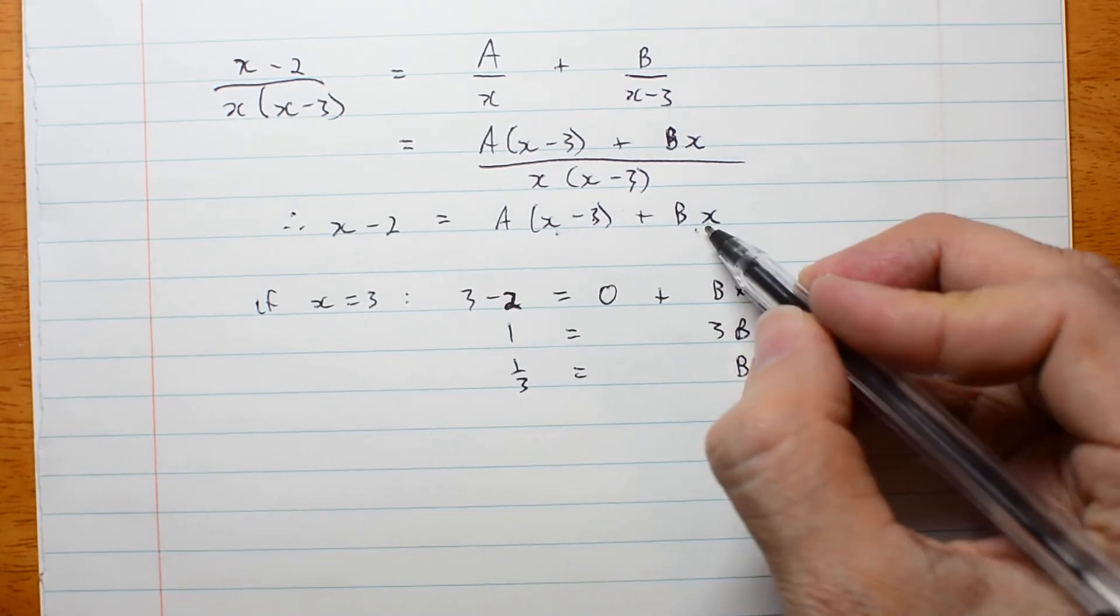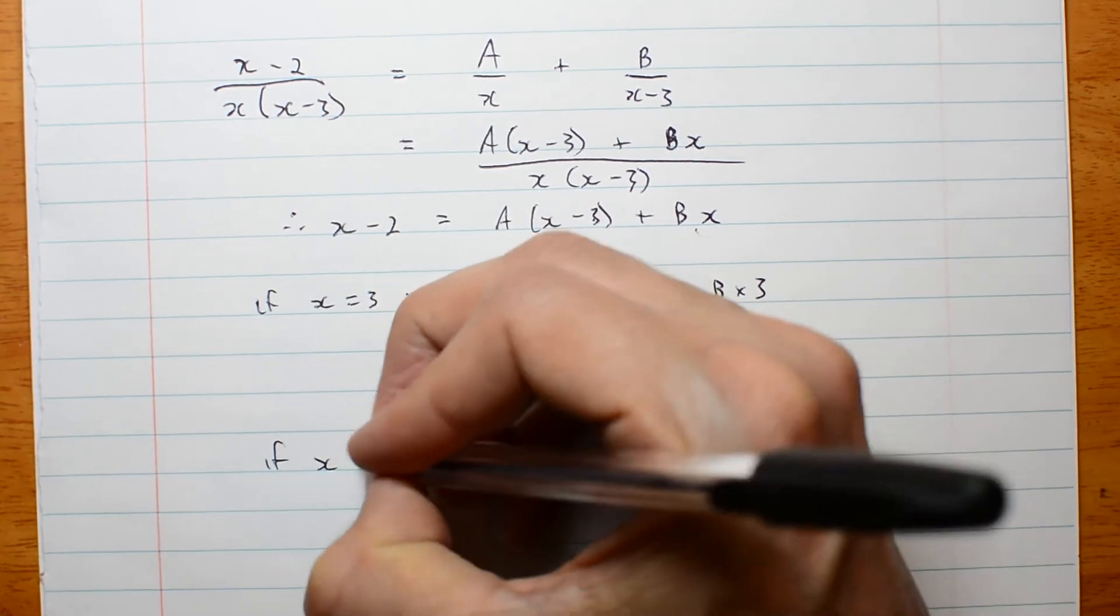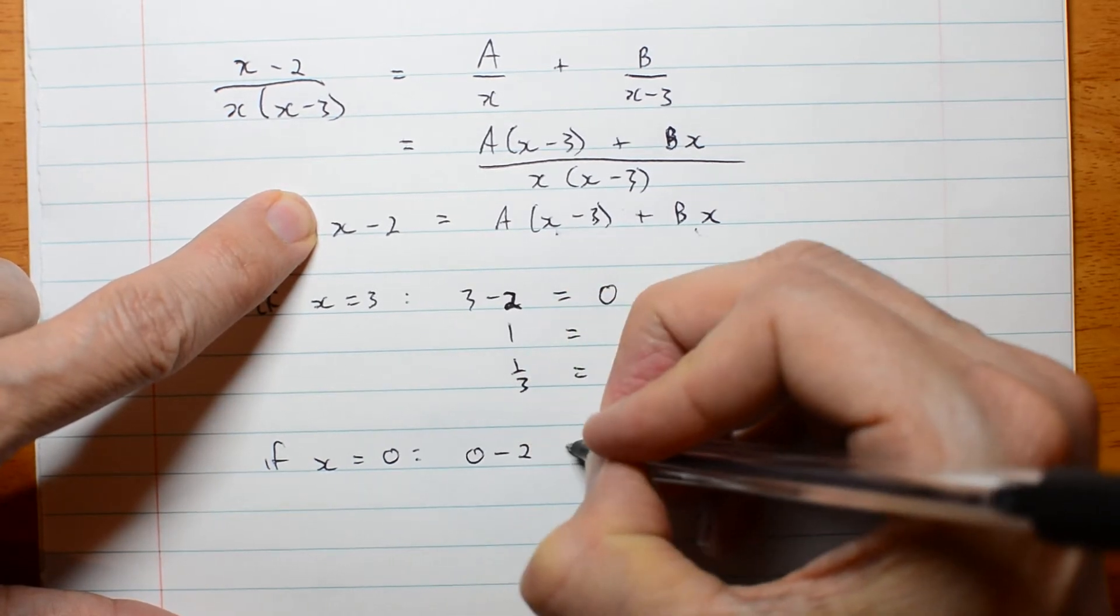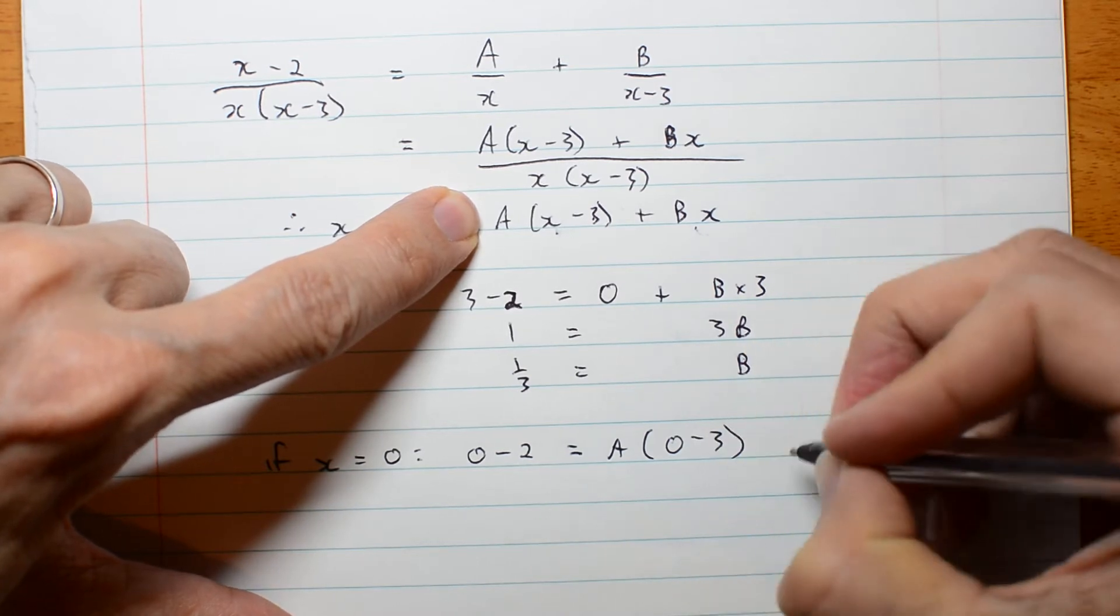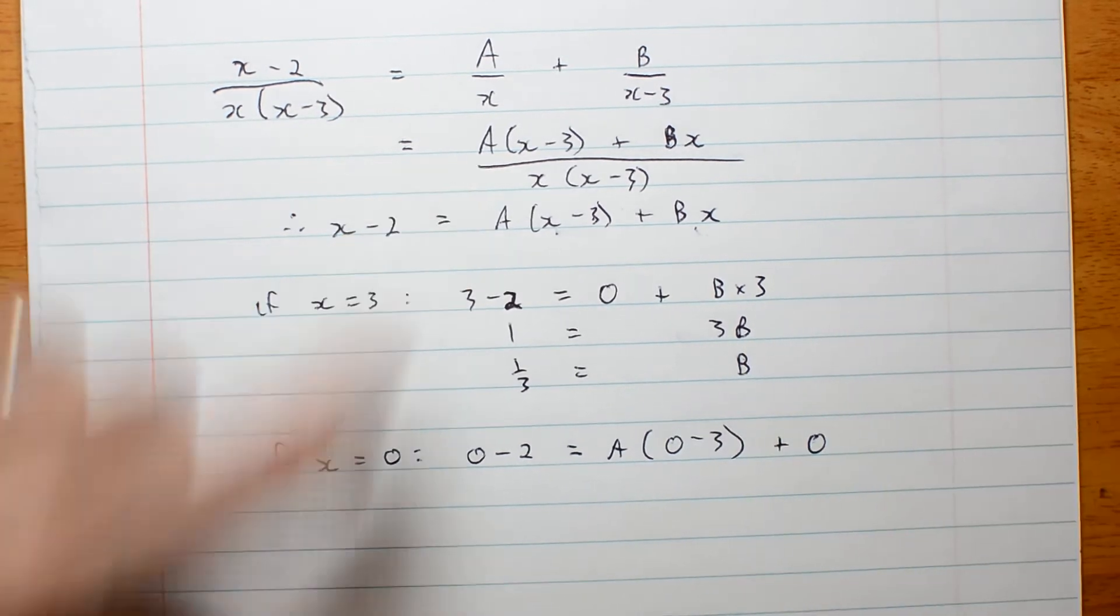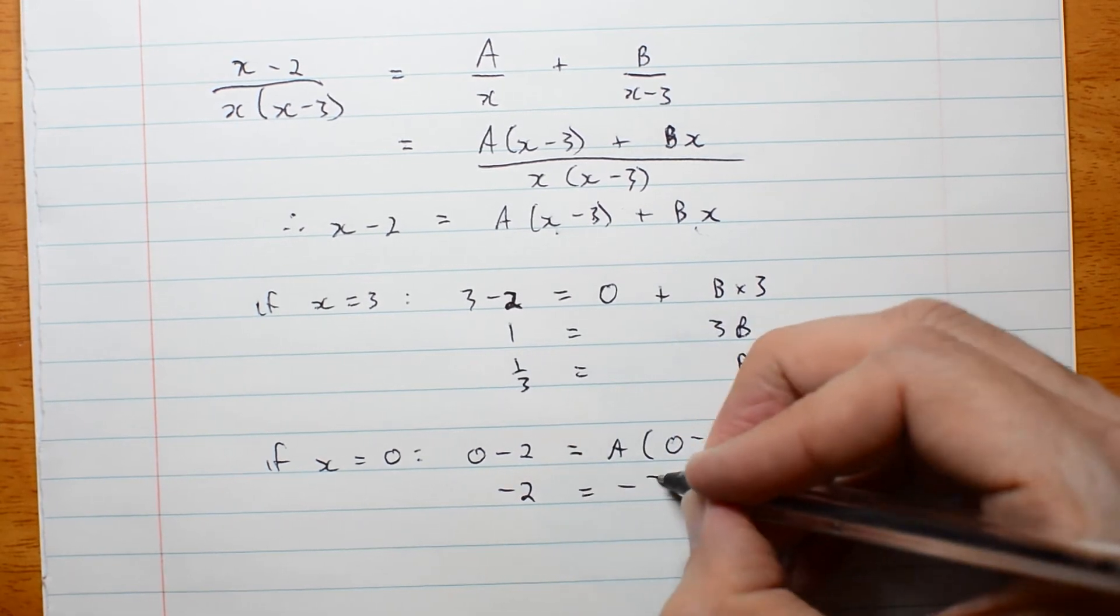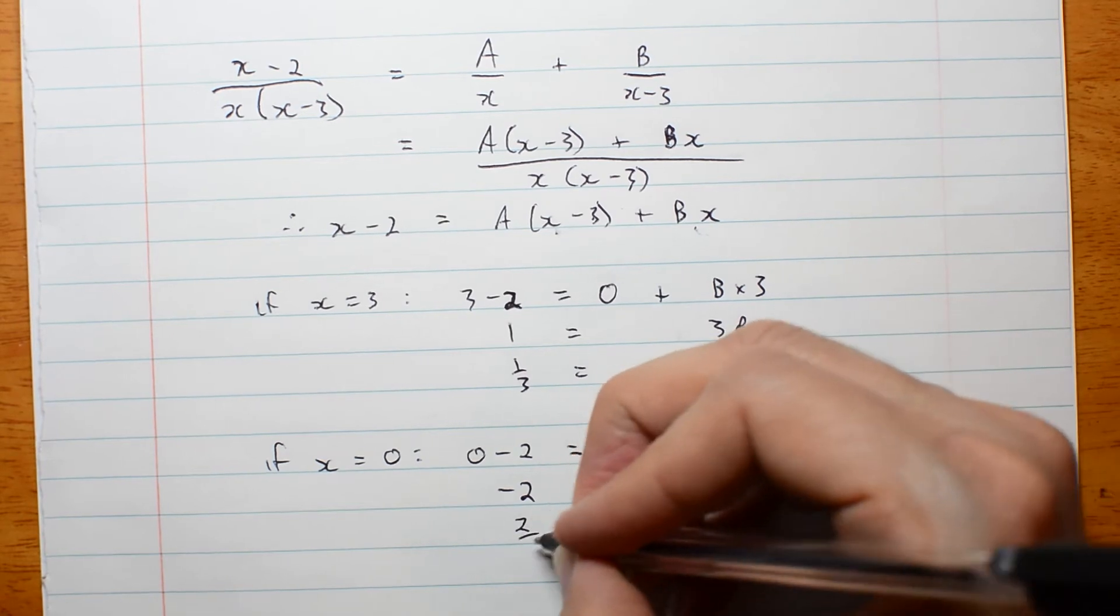How do I eliminate b? I set x equal to 0. If x is 0, then I have 0 take 2 is equal to a times 0 take 3 plus 0. So, negative 2 equals negative 3a, a must be 2 thirds.